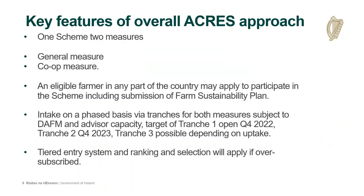The key features of the overall ACRES approach: it's one scheme with two specific measures — the general measure targeted at 30,000 farmers, and the cooperative measure with the expertise of cooperative teams helping to deliver, targeted at 20,000 farmers. An eligible farmer in any part of the country may apply, including the submission of a farm sustainability plan that sets out the actions to be undertaken by each individual farmer. Intake will be on a phased basis via tranches, similar to the GLAS approach, subject to DAFM and advisor capacity.